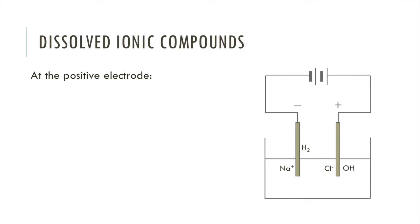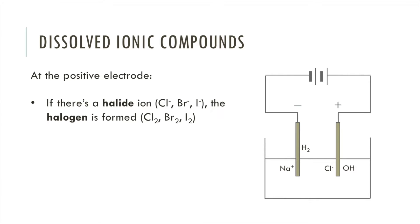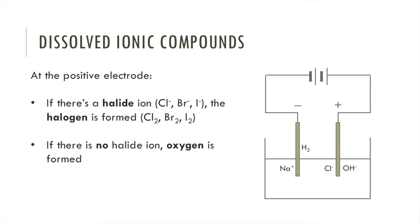Now looking at the positive electrode: if there is a halide ion — that's Cl⁻, Br⁻ or I⁻ — then the halogen is formed: Cl₂, Br₂ or I₂. If there is no halide ion, then oxygen is formed. In this example we do have a halide ion — we have the chloride ion — so chlorine gas is produced.